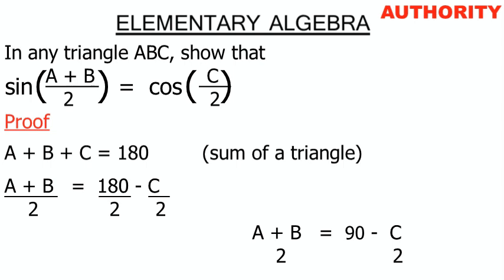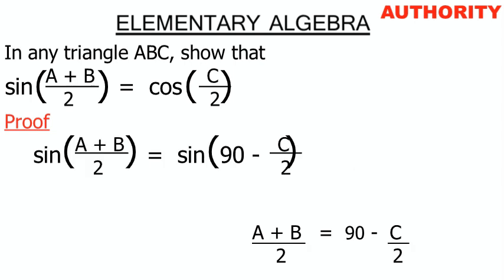Now let's take the sine of both sides. Since our question involves sine, we get: sin((A+B)/2) = sin(90° − C/2).